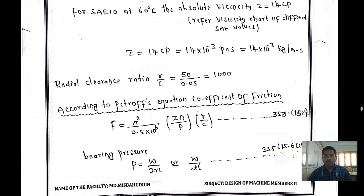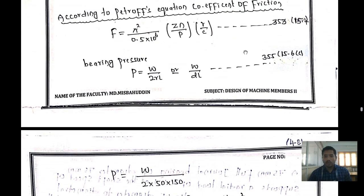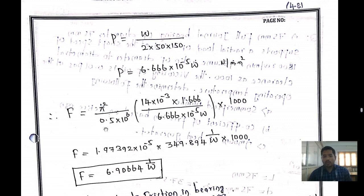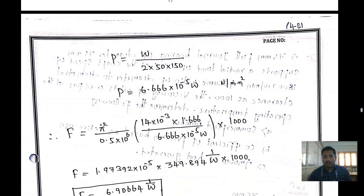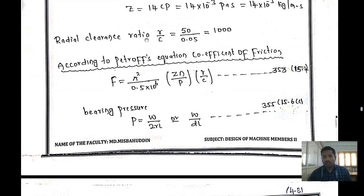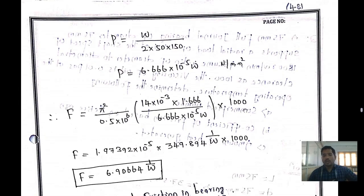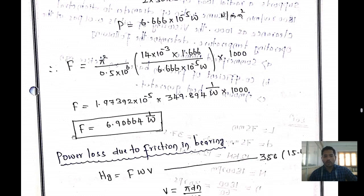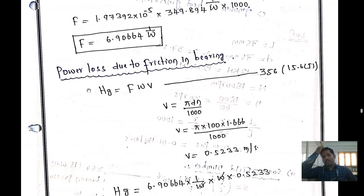Substituting into the Petrov equation f = (π² / 0.5) × 10⁻⁶ × (zN/p) × (r/c), with z = 14 × 10⁻³, N = 1.666, p = 6.666 × 10⁻⁵ × W, and r/c = 1000, the coefficient of friction by the Petrov equation is 6.90 / W.